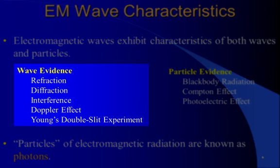We have evidence that it's a wave because it refracts like a wave, it diffracts like a wave, it can interfere with itself like a wave, you can detect the Doppler effect in light, a wave characteristic, and Young's double slit experiment, which we talked about previously, showing interference.